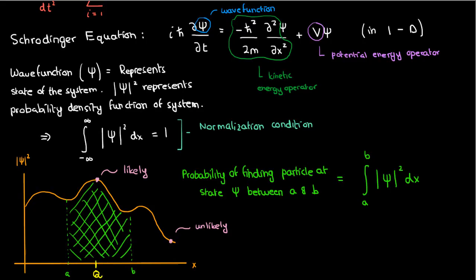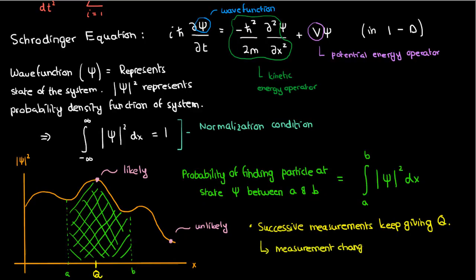But what if you take another measurement immediately after on that same system? Instead of getting something completely different elsewhere in the domain, you'll get the same answer. And if you keep taking measurements very quickly, one after the other, you'll keep getting that same answer Q. But how is that possible? If the particle's position is supposed to obey a probability distribution that covers multiple values, how do I keep getting the same value after measuring so many times?